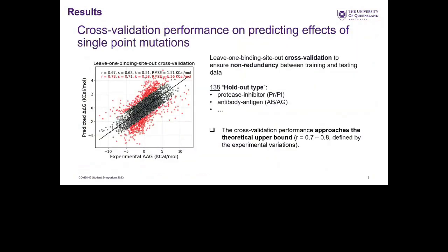This shows the cross-validation performance on predicting the effects of single-point mutations. The full dataset was divided into 138 folds depending on the protein-protein complex group — such as protease inhibitors, antibody-antigens, and so on. At each iteration, the model was trained on 137 folds and tested on the remaining one, ensuring non-redundancy between training and testing data and avoiding model overfitting.